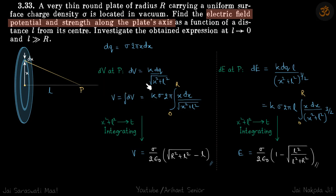Potential at P due to the ring is k dq by distance. All the charges are at a distance root of x square plus L square.